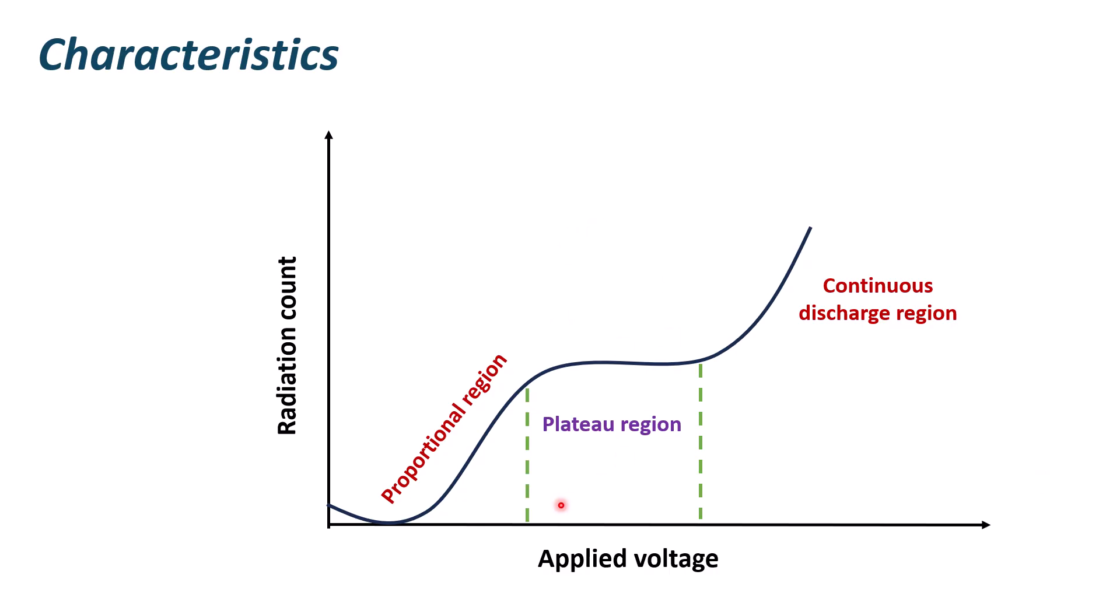Basically, if you want to work with the GM counter, applying voltage in between the plateau region is required. And therefore, in order to calculate optimal voltage of the GM counter, we need to see where that plateau region is started, where it ends. And if you take average of that two voltage values, you will get the optimal voltage of the GM counter.